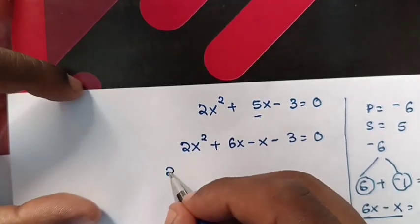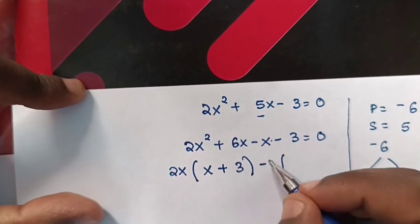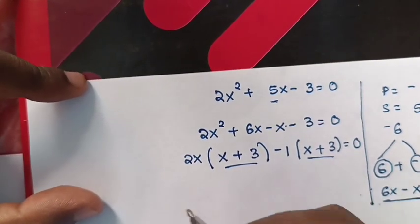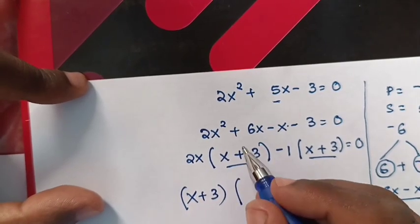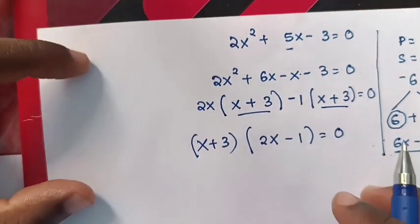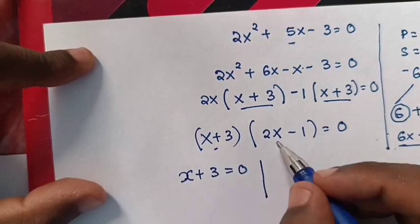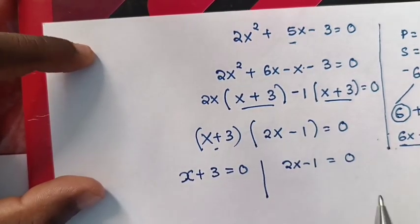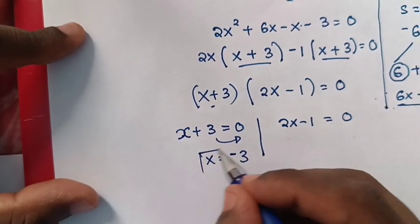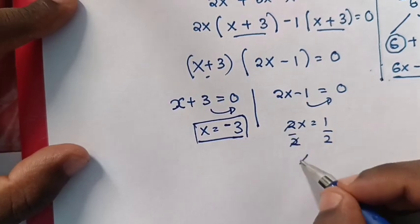Factoring by grouping: 2x is common in the first two terms, giving 2x(x plus 3); negative 1 is common in the last two terms, giving negative 1(x plus 3). So (x plus 3)(2x minus 1) is equal to 0. From x plus 3 equals 0, x is equal to negative 3. From 2x minus 1 equals 0, 2x equals 1, so x equals one half.